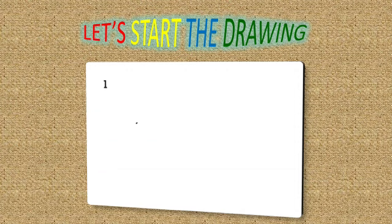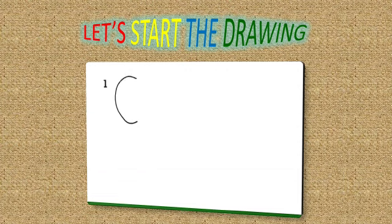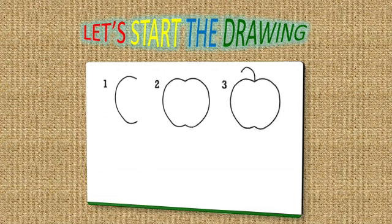So, my dear children, I am starting to tell you how I have drawn this apple step by step. Please see the video. Let's start the drawing. First, I will draw a right curve. Then, I will draw a left curve and join the dots. Then, I will draw a left curve like this. After that, last I will draw a small leaf like this. This is an apple.